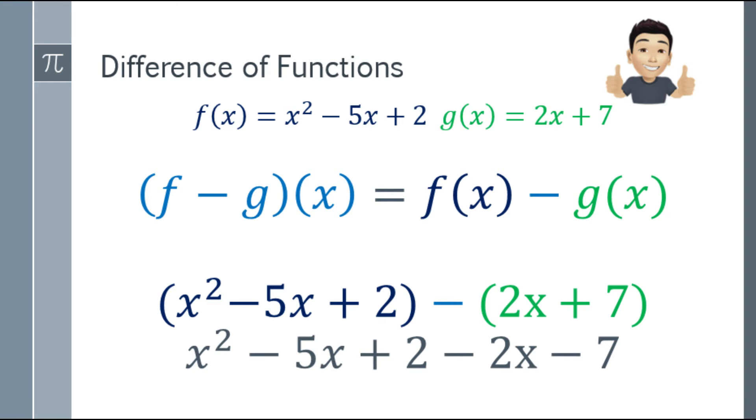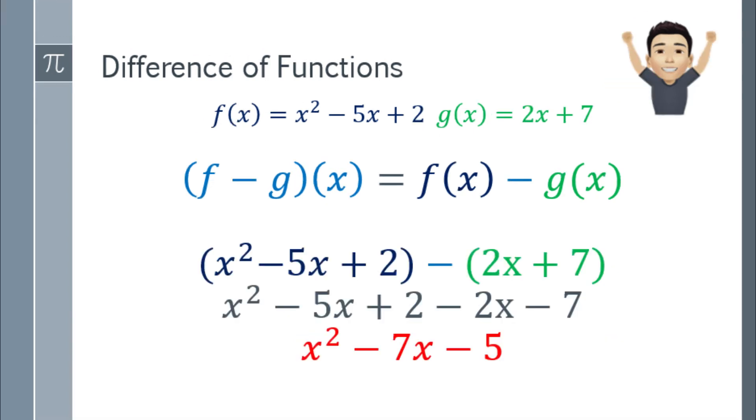That will be x² - 5x + 2 minus 2x minus 7. Yung change of sign mo. 2x is positive. E dahil minus na siya, that will be negative 2x na. Tapos yung plus 7, ma-minus 7 na siya. Be careful with that. And finally, simplify natin. That will be x² - 7x - 5.